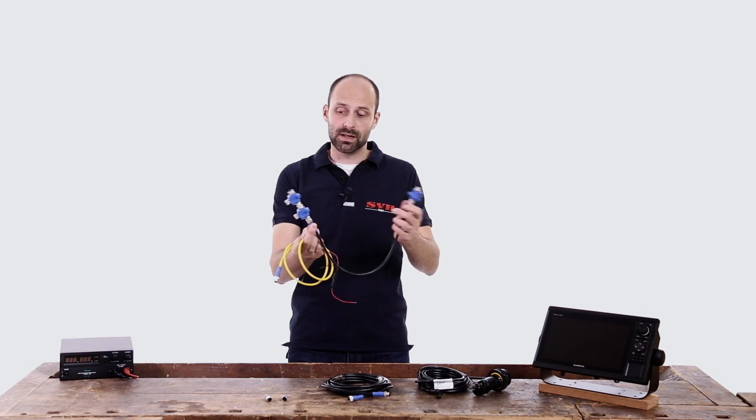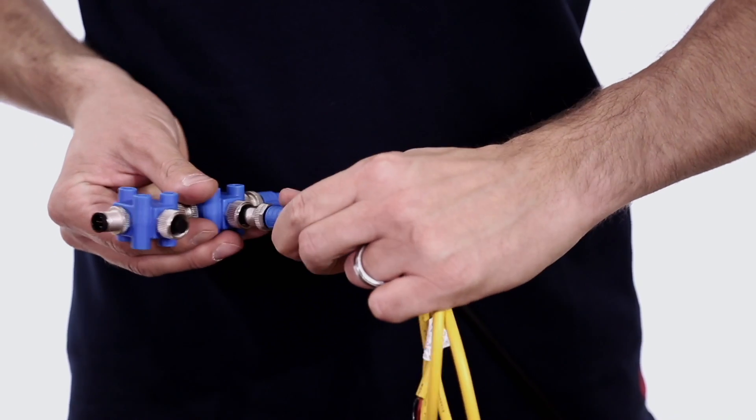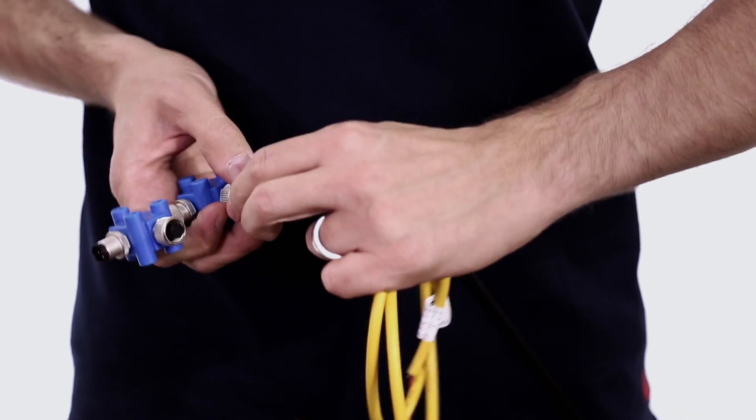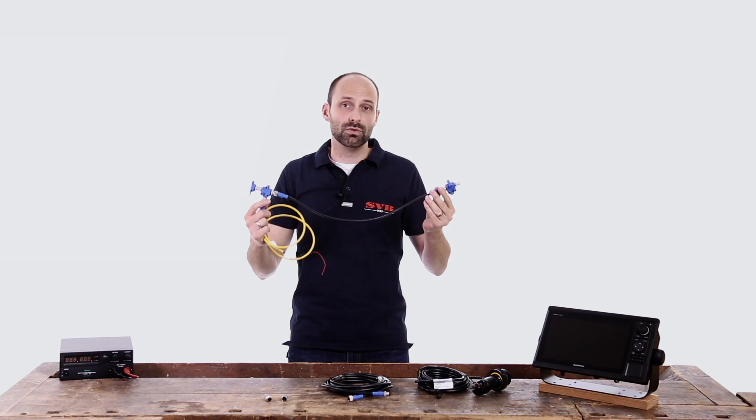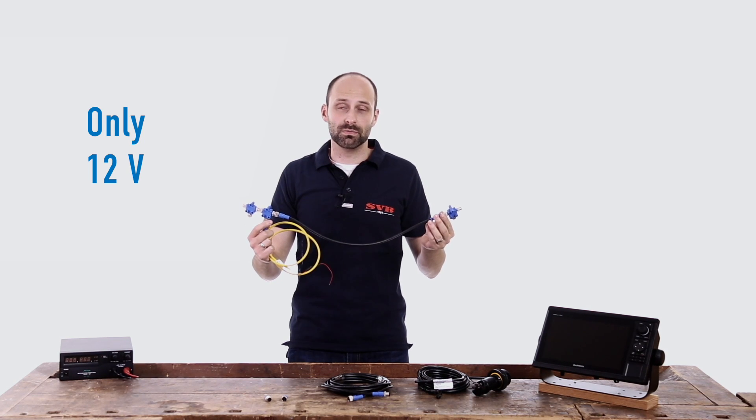In order to achieve a balanced power supply this should be placed as close to the middle of the network as possible. In our case it would be this T piece here. It is also important to note that the NMEA2000 system may only be run on a 12 volt basis.